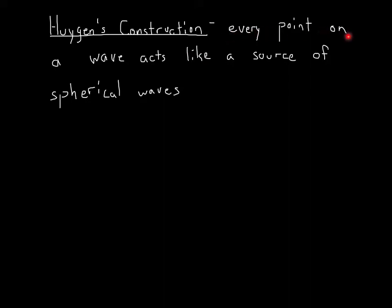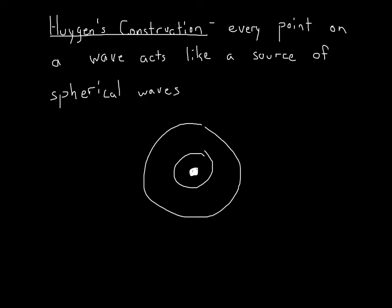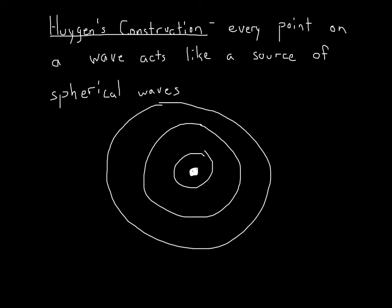What Huygens said was that every point on a wave acts like a source of spherical waves. The way I think of it is that every point on a wave is like a pebble. If I take a pebble and drop it into water, you see ripples come out in big circles. These circles are the spherical waves emanating from that central point. So every point on a wave creates a spherical wave that moves outward, like dropping a pebble into a pond.